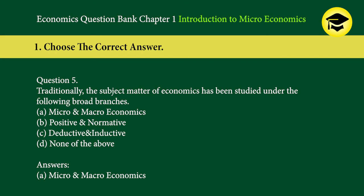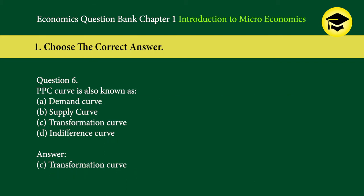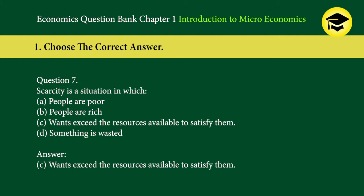Question 5: Traditionally, the subject matter of economics has been studied under the following broad branches — A. micro and macroeconomics, B. positive and normative, C. deductive and inductive, D. none of the above. Answer: A. Micro and macroeconomics. Question 6: PPC curve is also known as — A. demand curve, B. supply curve, C. transformation curve, D. indifference curve. Answer: C. Transformation curve.